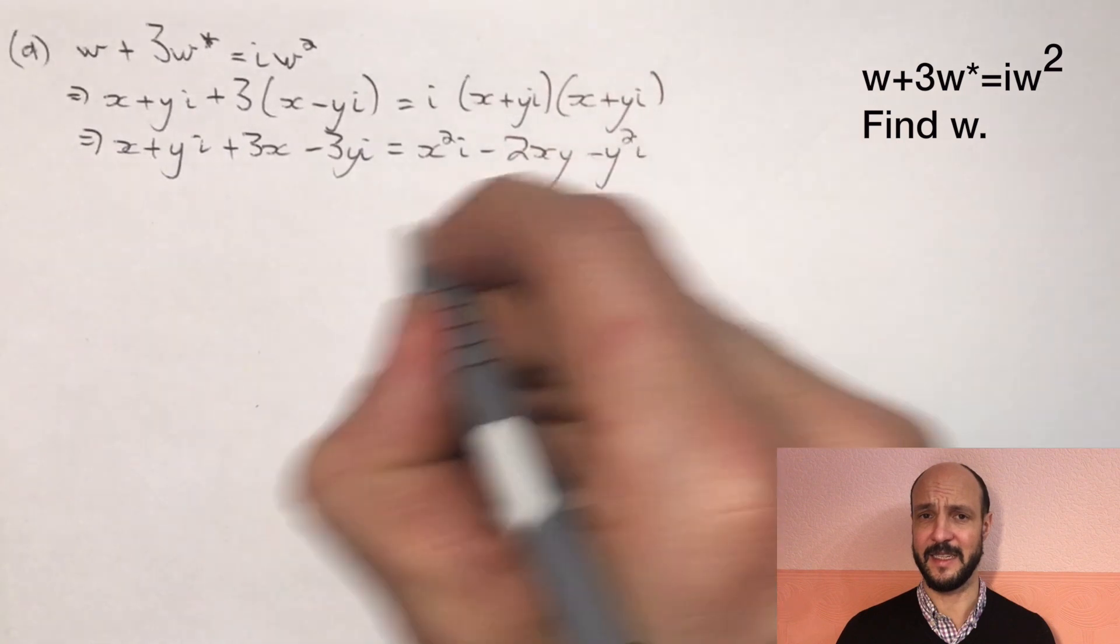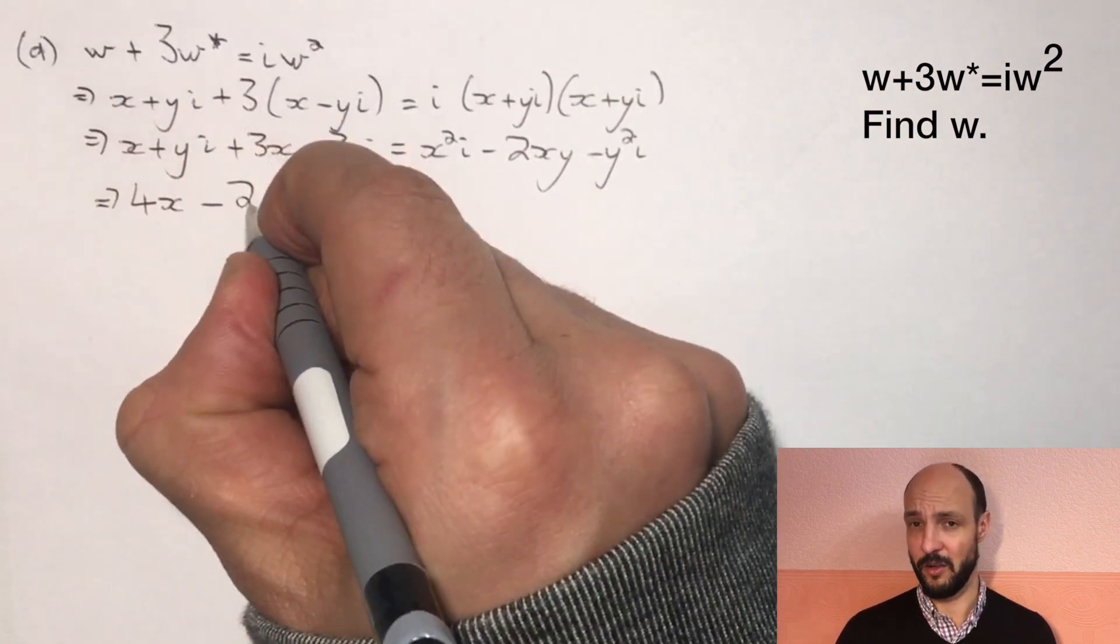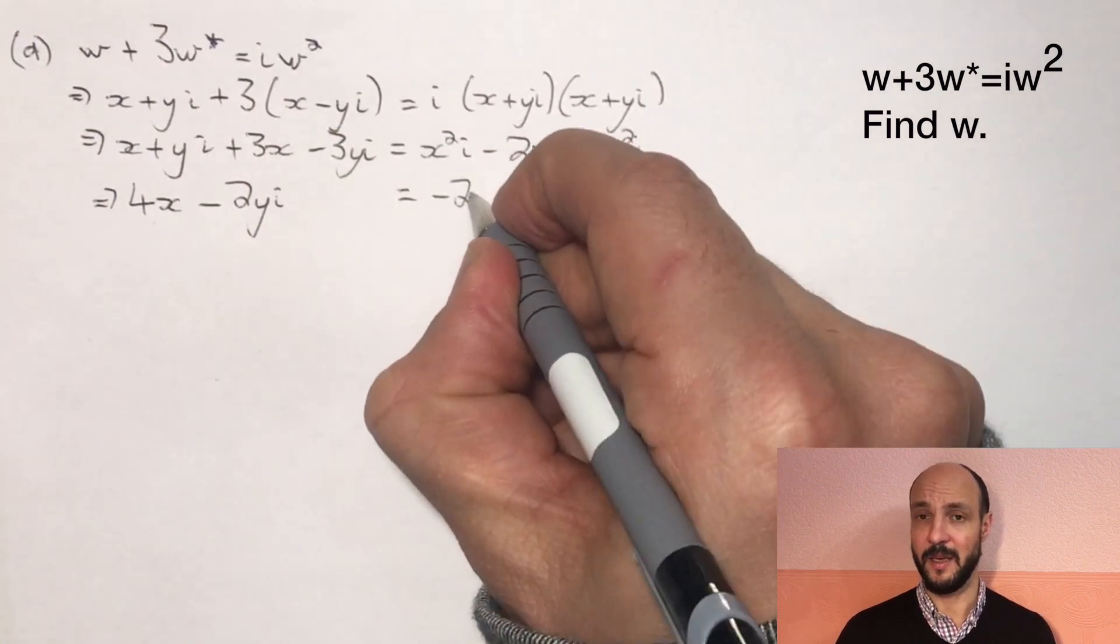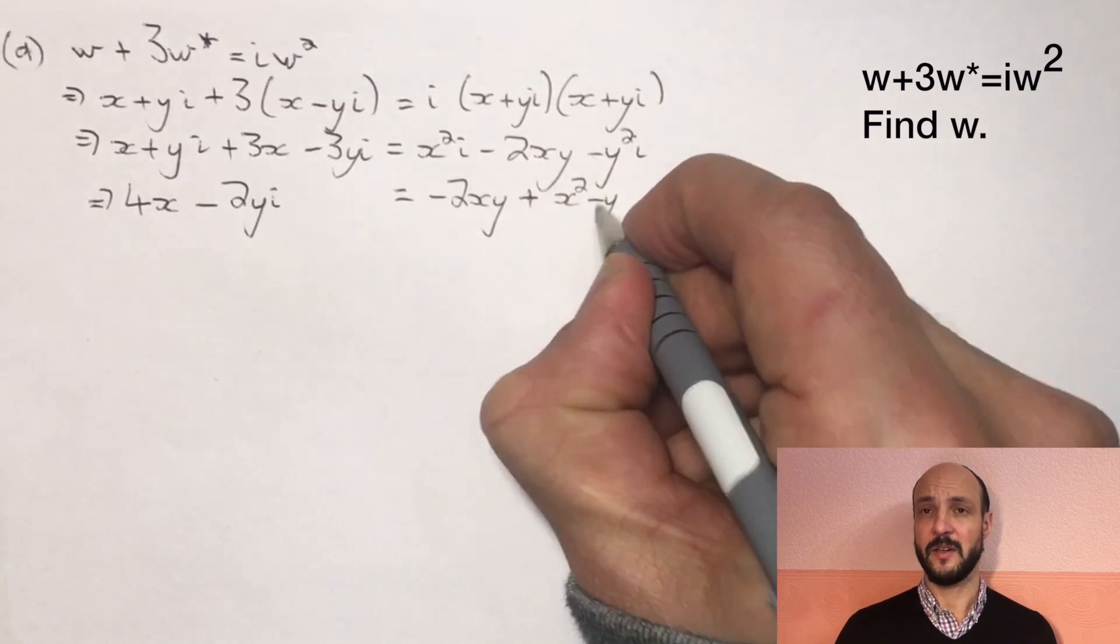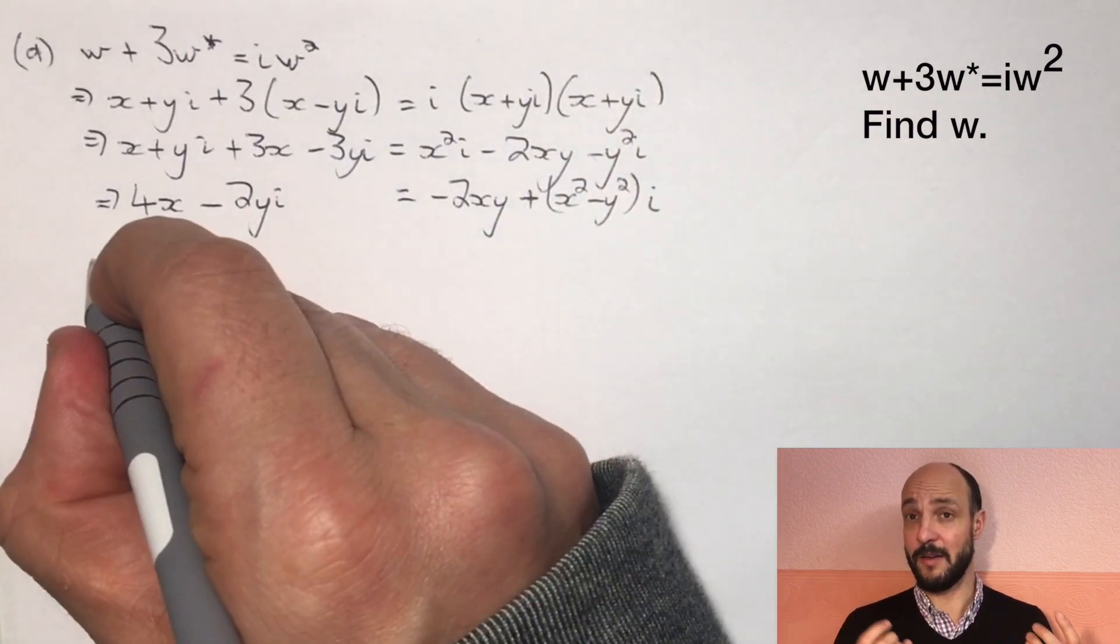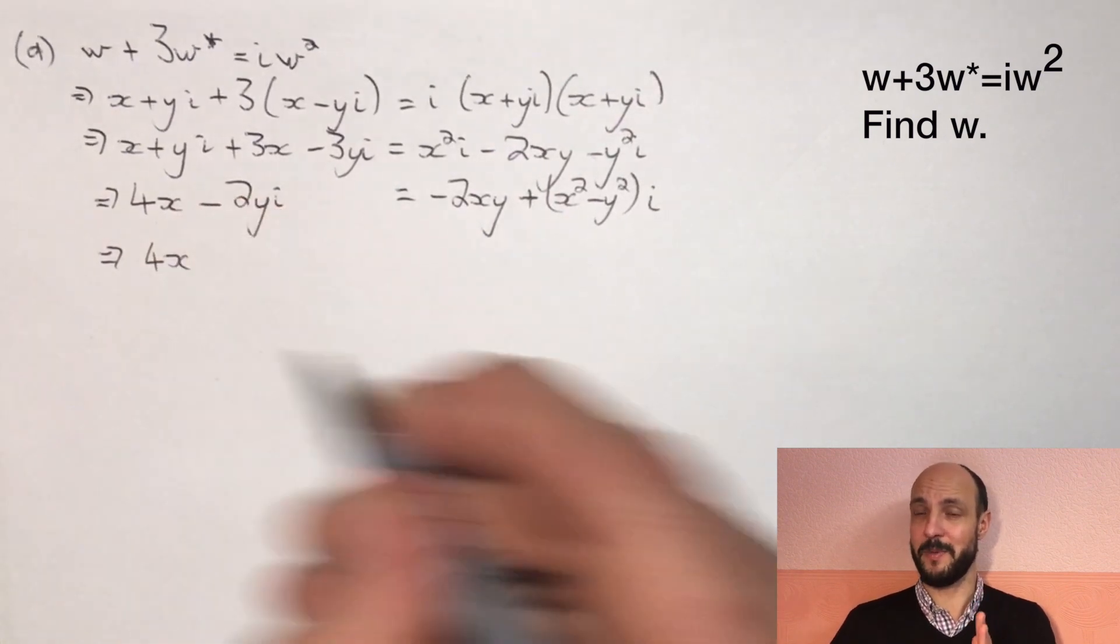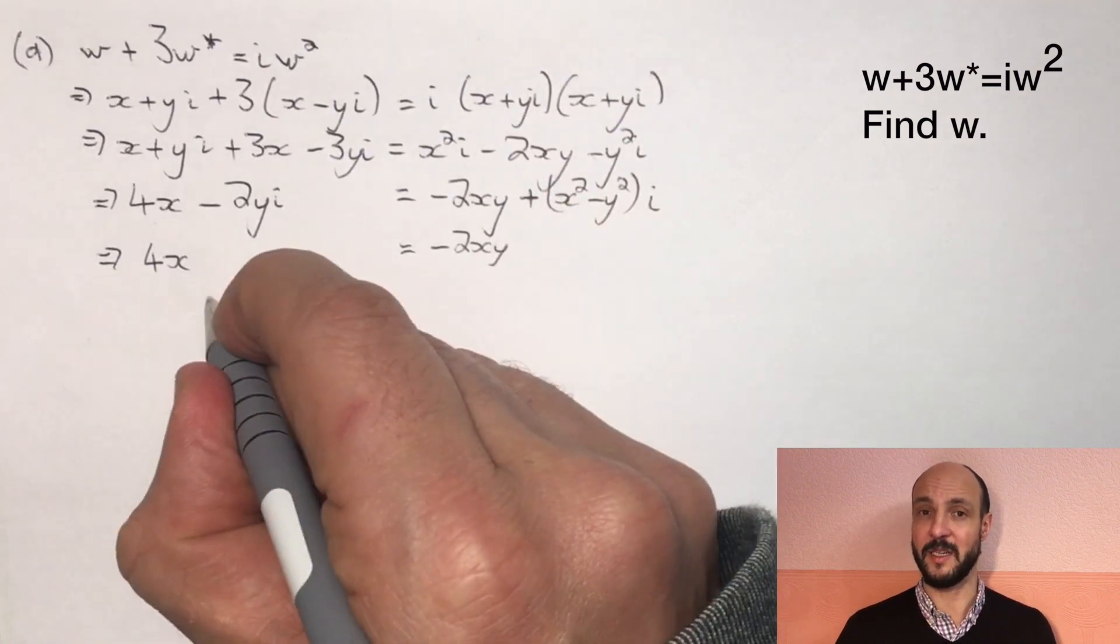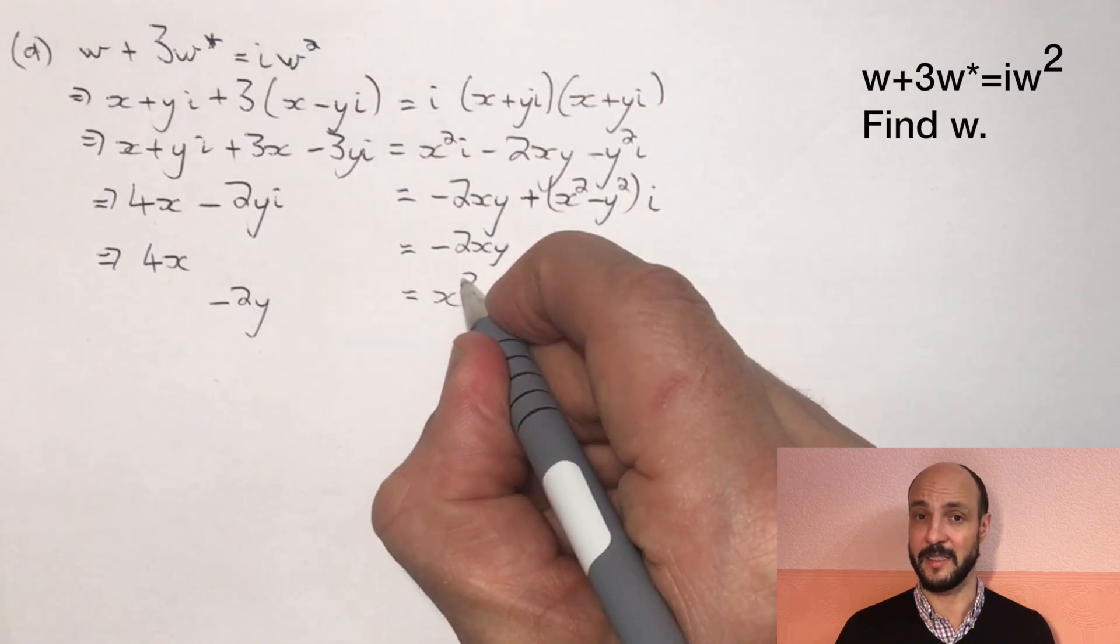So on the left hand side there's X and there's 3X, so there's 4X minus 2Yi. And on the right hand side we've got minus 2XY plus in brackets X² minus Y² times by i. So now if one imaginary number equals another imaginary number, that means their real parts must equal each other and their imaginary parts must equal each other. Because they're perpendicular, we can split this equation into two equations, equating the real parts and equating the imaginary parts, thus giving us a system of simultaneous equations that we can go ahead and solve.